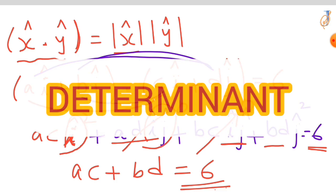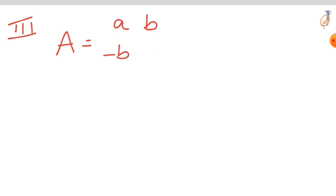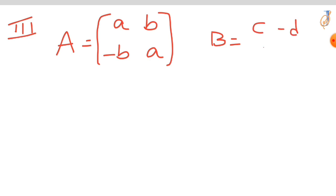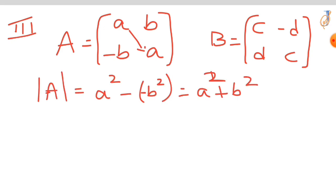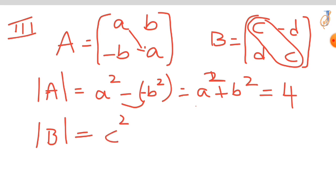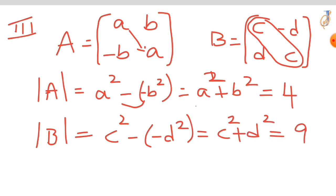Let's check the third method using determinants. Let matrix A equal to [[a, b], [−b, a]] and matrix B equal to [[c, −d], [d, c]]. The determinant of A is a² minus (−b²), which equals a² plus b², and from the given equation that value is 4. Similarly, the determinant of B is c² plus d², which from the given equation equals 9.